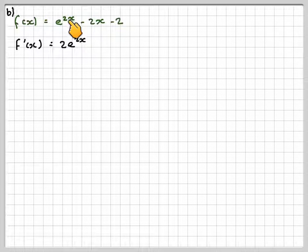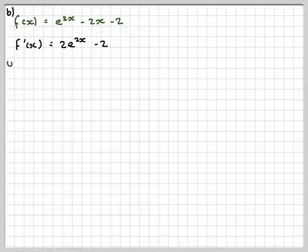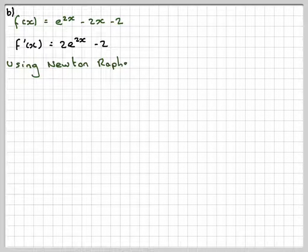Differentiate 2x, you get minus 2. Differentiate minus 2, you get 0. So you do need to know how to differentiate to use this method.